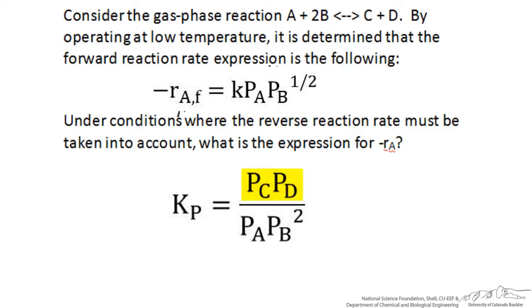So the pressure of the products over the pressure of the reactants, each raised to their stoichiometric coefficient, and so we have the pressure of B squared in this term.